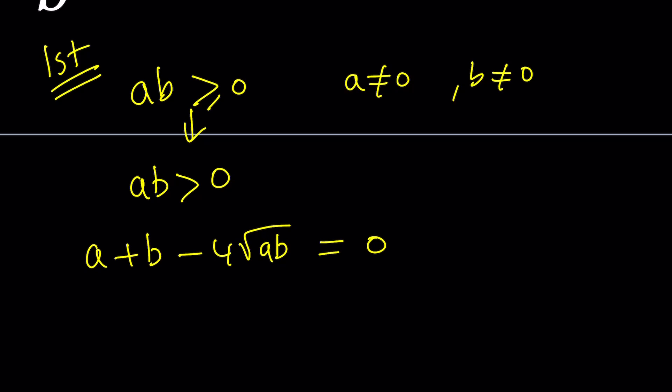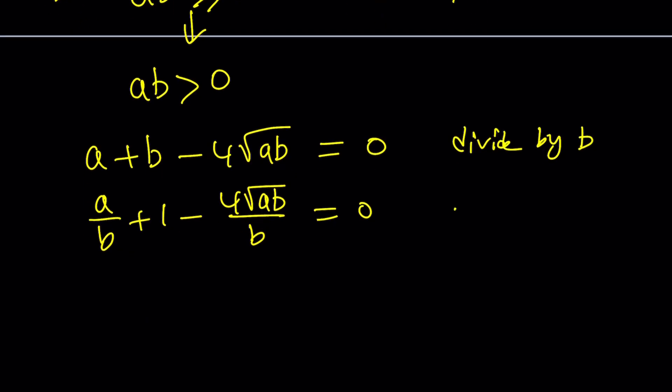Next thing we're going to do is divide both sides by B, and you'll see in a little bit why it's helpful. A over B plus B over B, which is 1. And then, if you divide this, you're going to get square root of AB divided by B. Now, one thing to keep in mind here, if you separate the square root of AB as square root of A times square root of B, and then write B as square root of B times square root of B, then these are going to cancel out, leaving us with this expression.